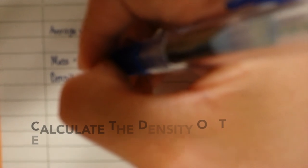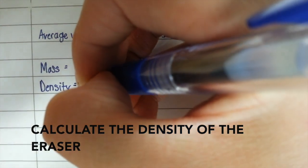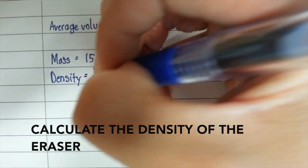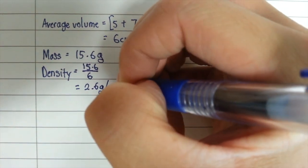Finally, we will find the density of the eraser by taking its mass divided by its average volume. The density of the eraser is 2.6 g per cm³.